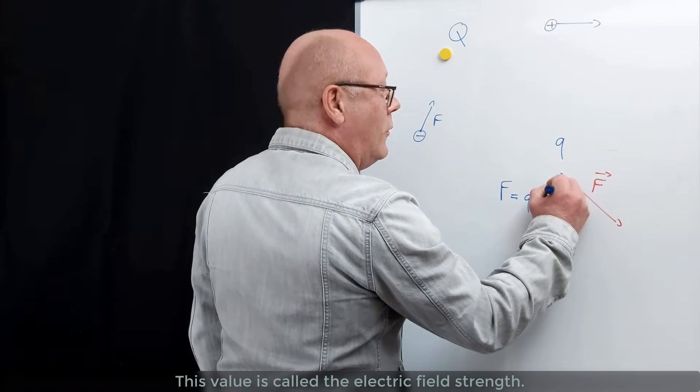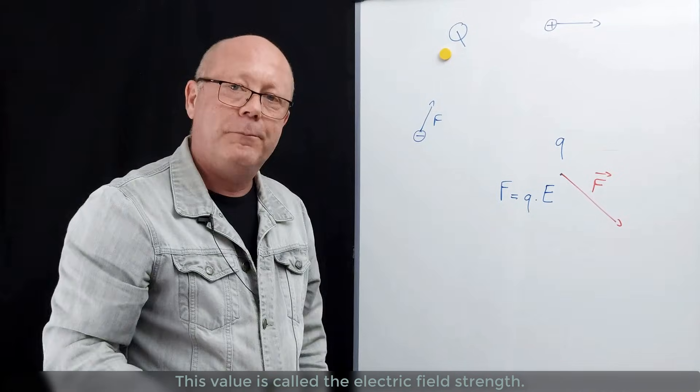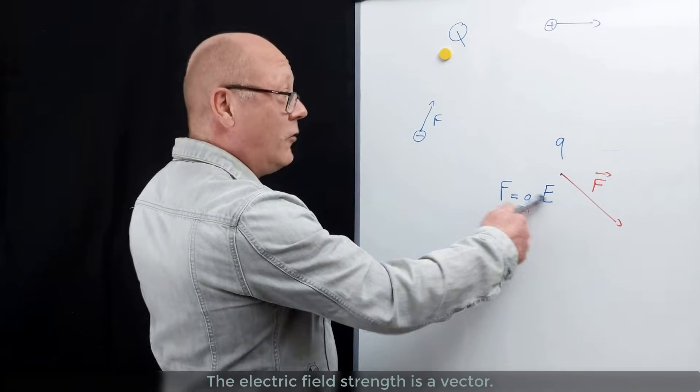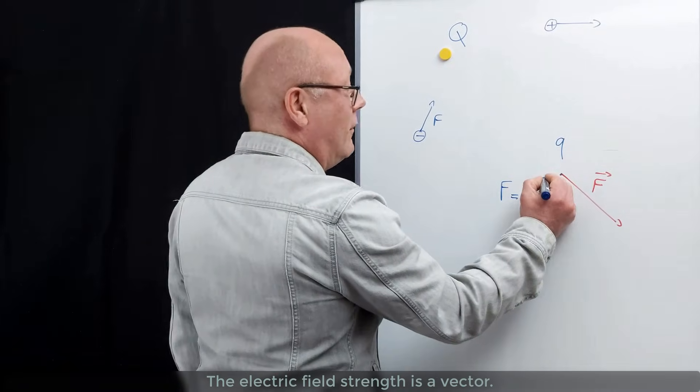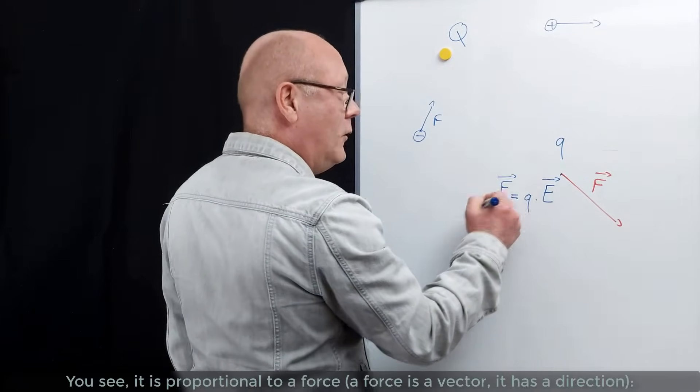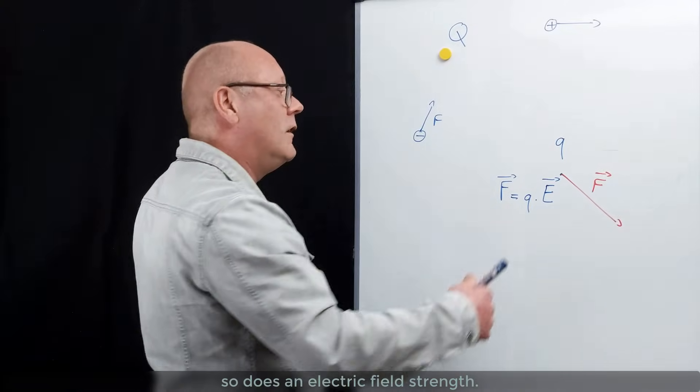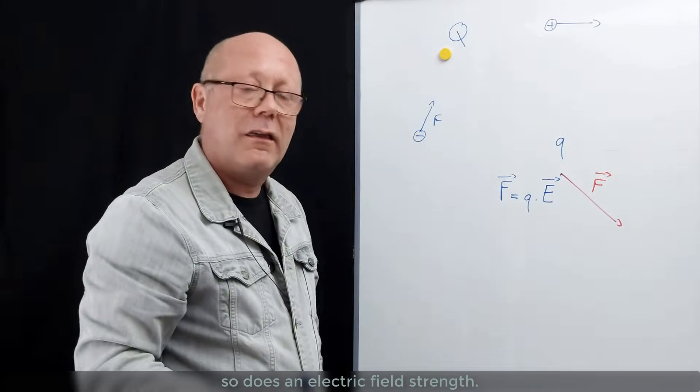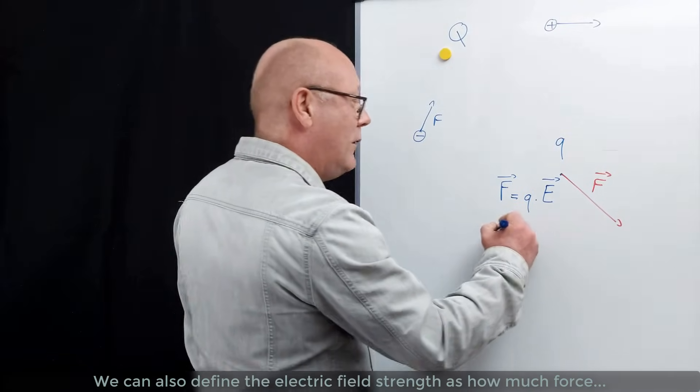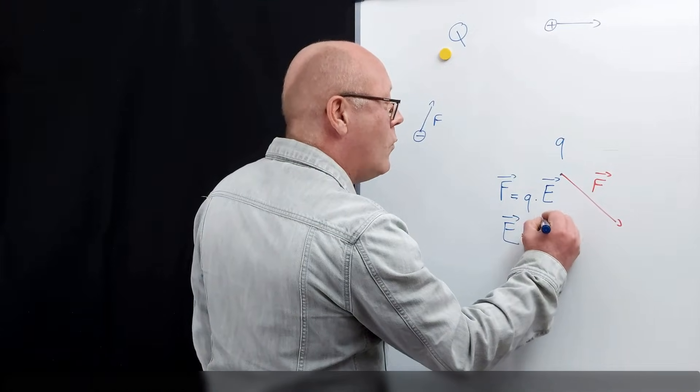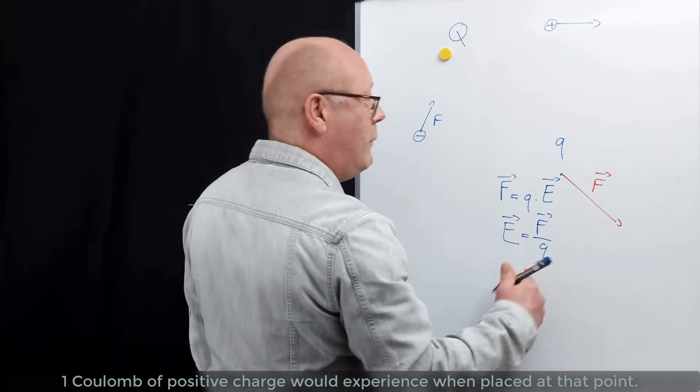This value is called the electric field strength, the strength of the field. The electric field strength is a vector. Because, you see, it's proportional to a force. So force is a vector. It has a direction. So does an electric field strength. We can also define the electric field strength as how much force one Coulomb of positive charge would experience when placed at that point.